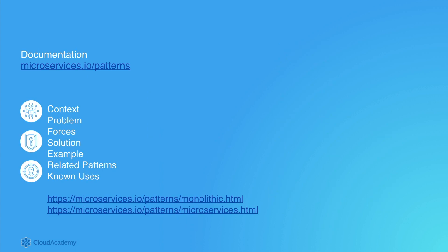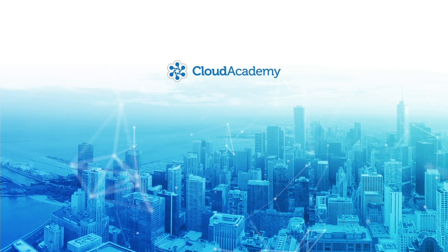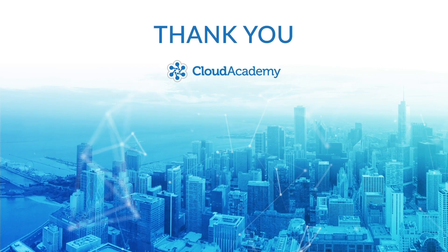The following website documents additional attributes associated with both the monolithic and microservice based architectures and is highly recommended reading. In particular, take a look at the links presented here. For each style of architecture, the website provides pattern information on context, problem, forces, solution, example, related patterns, and known uses. We really do hope you will enjoy and learn from this content.